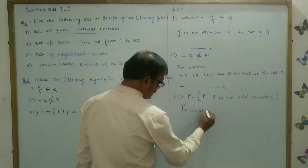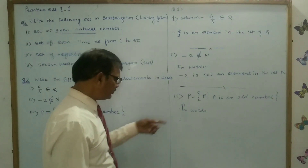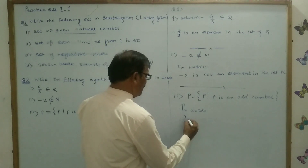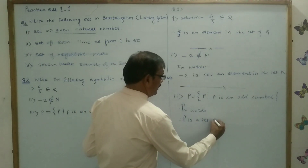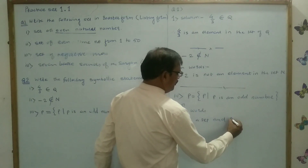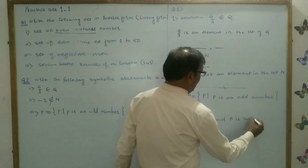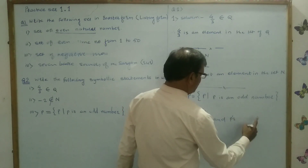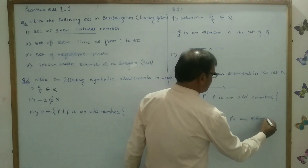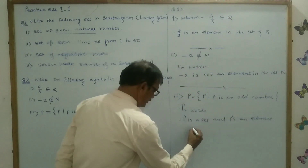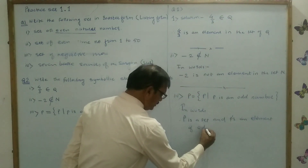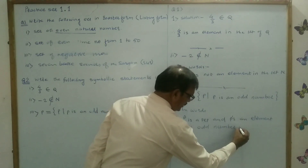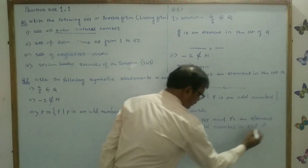So here, P is a set, and P is a piece, and any name of odd number in set P.